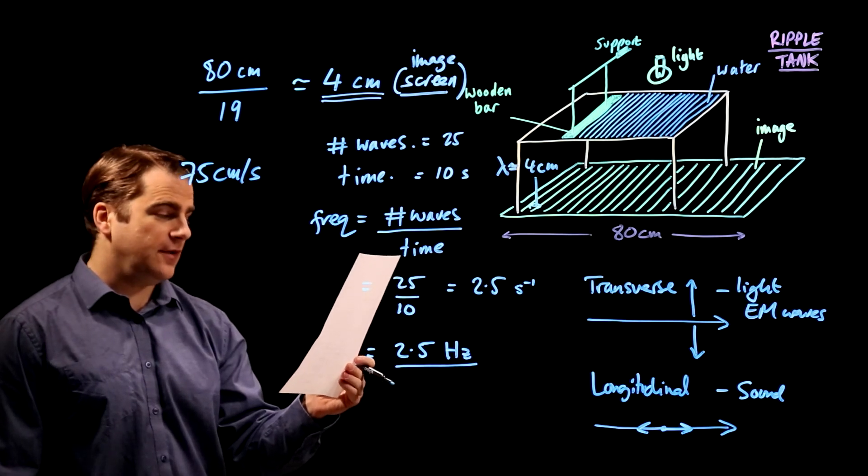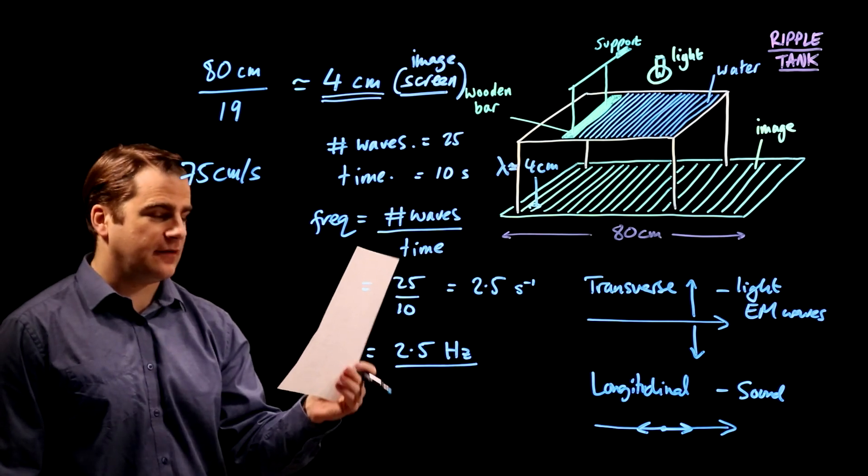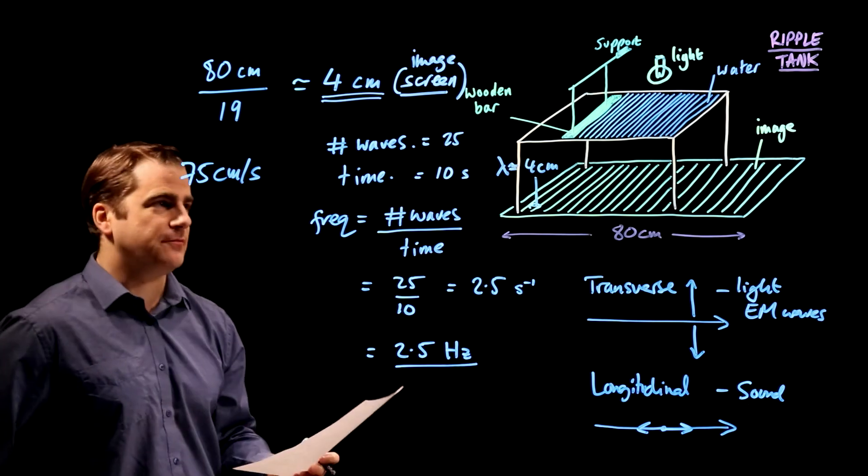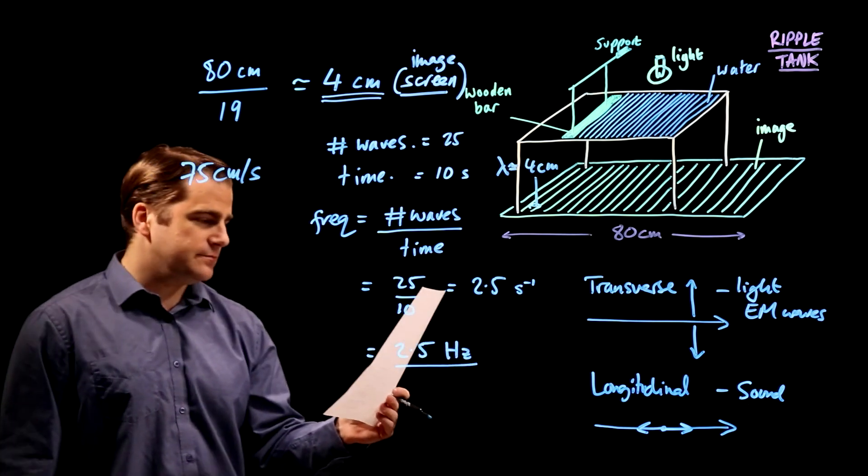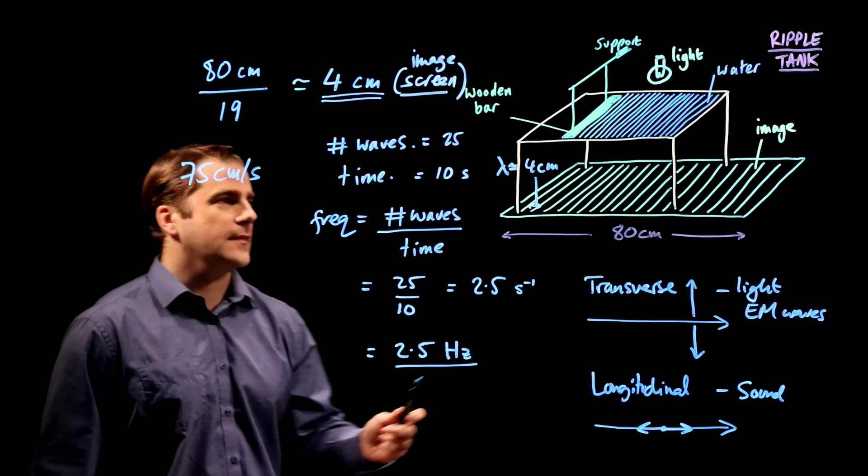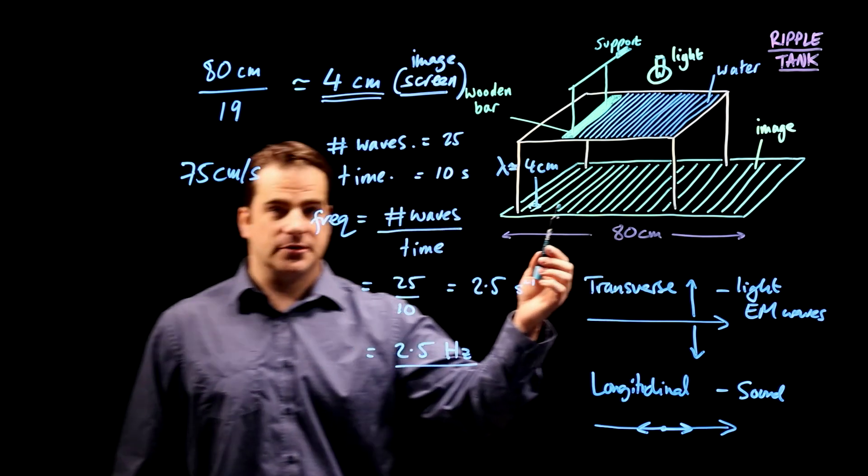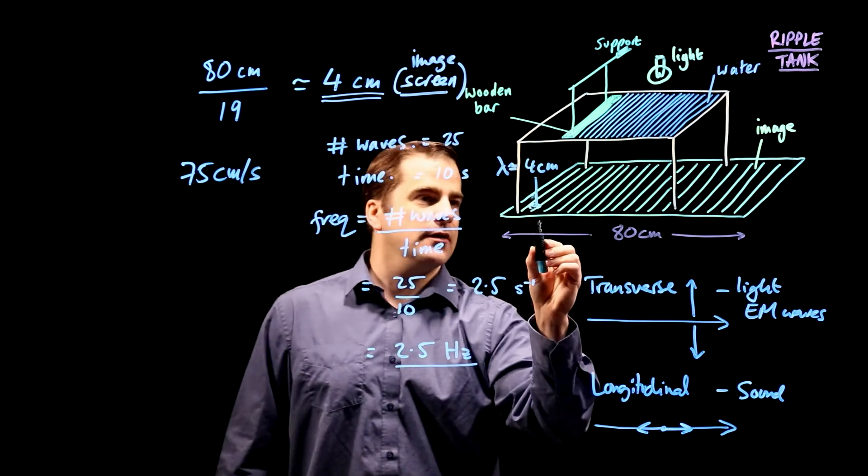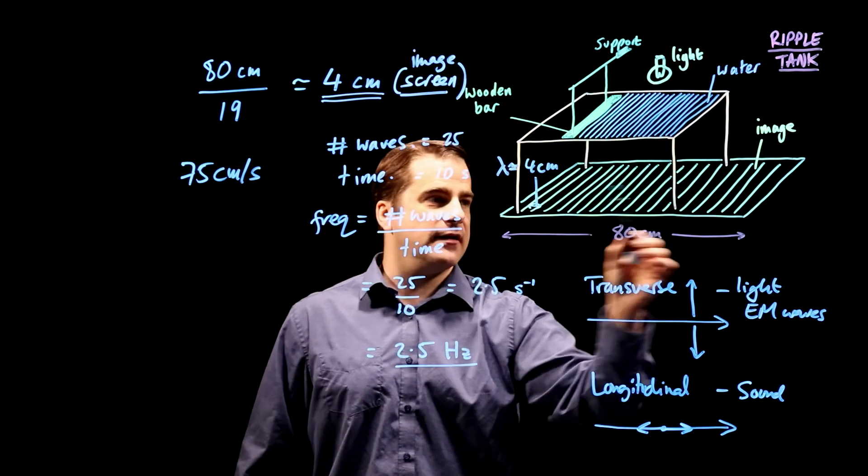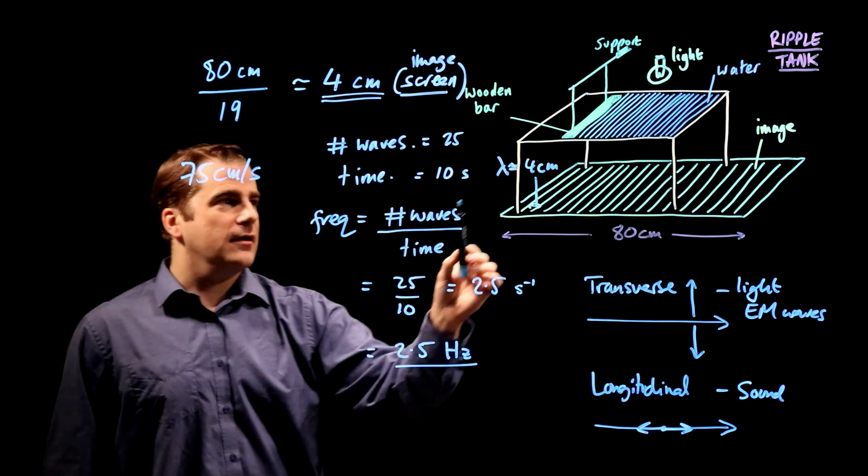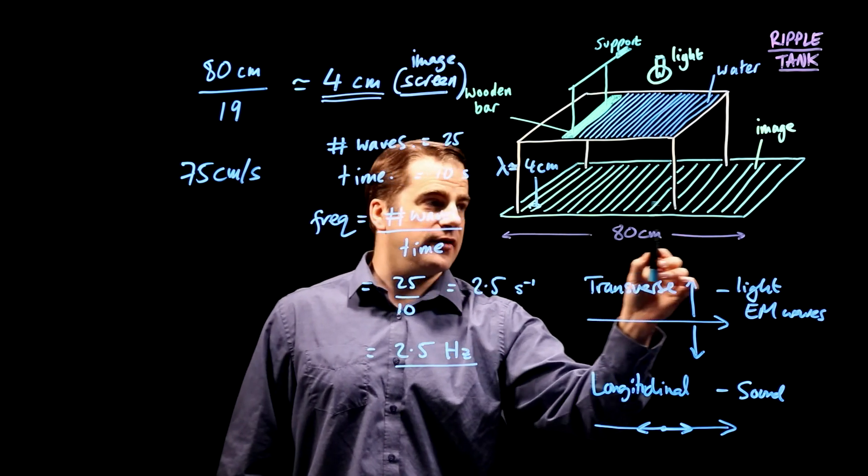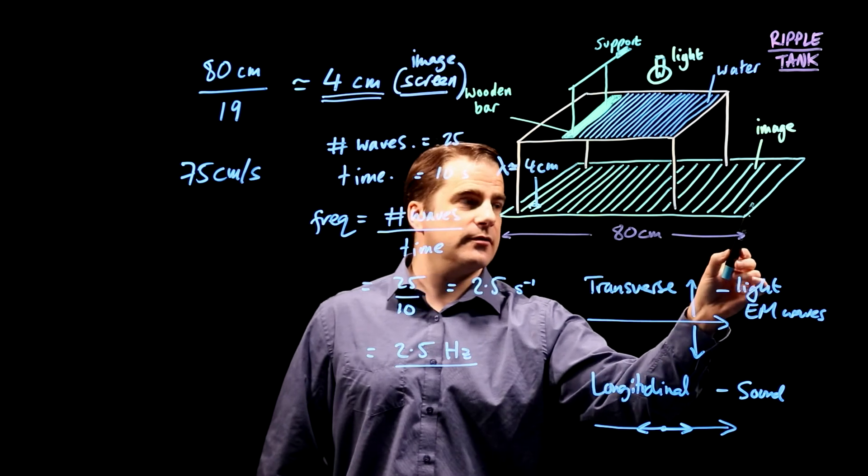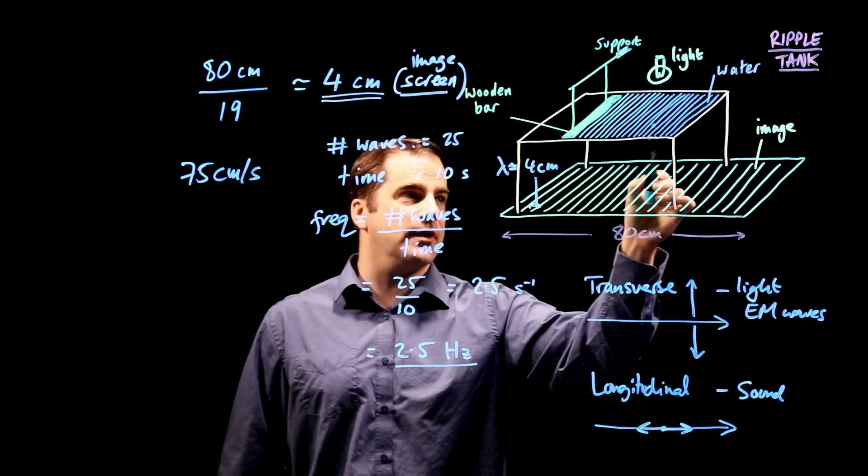D, the wave on the screen is magnified. Yeah, it's going to be that one. So, like we were just talking about, you have an image of the actual thing down here. Because the image is bigger, these waves in the image are going to move faster than the actual waves.